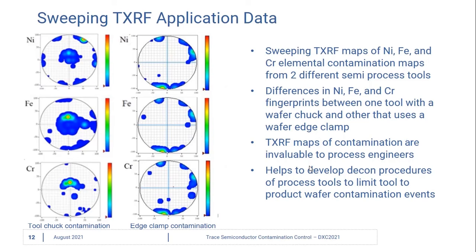This demonstrates how these elemental maps are very useful for process engineers. If they have a clear idea and a visual picture of where the contamination is coming from, it makes it easier for them to develop decontamination procedures to clean up this contamination in their processing tools and limit future tool-to-product wafer contamination events.